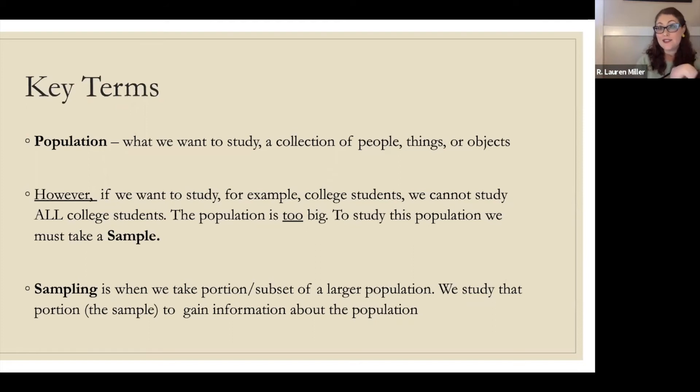For my dissertation, I was looking at non-traditional students who were affected by COVID-19. I couldn't talk to every single non-traditional student. Non-traditional students are over 25, got a GED, or are returning to college after a break. I took a subset and only interviewed 12 for my study. I can gather information about that group and hopefully push that to be a population parameter.